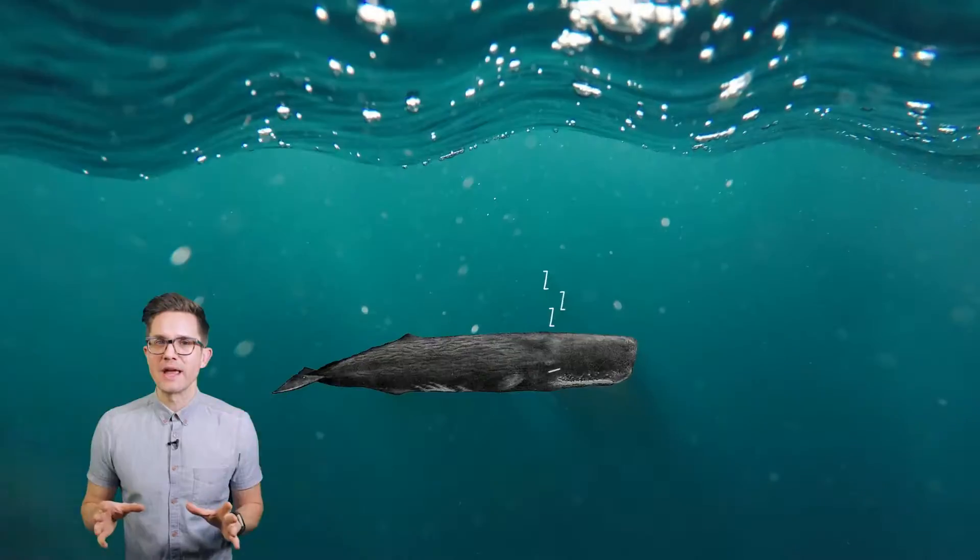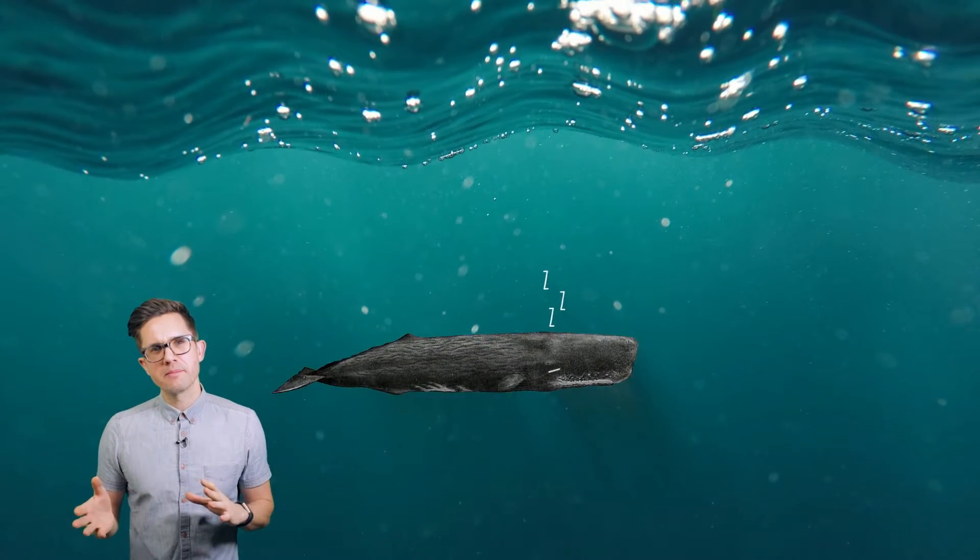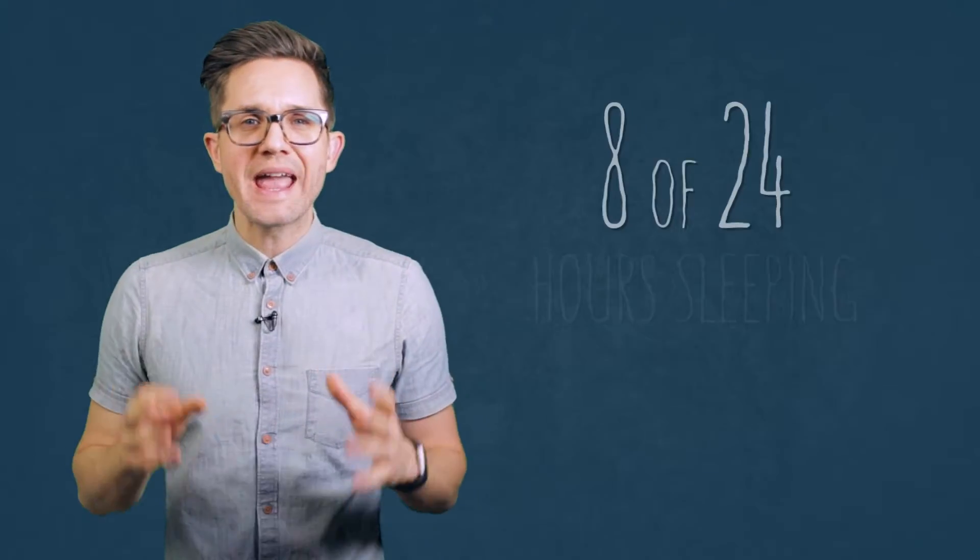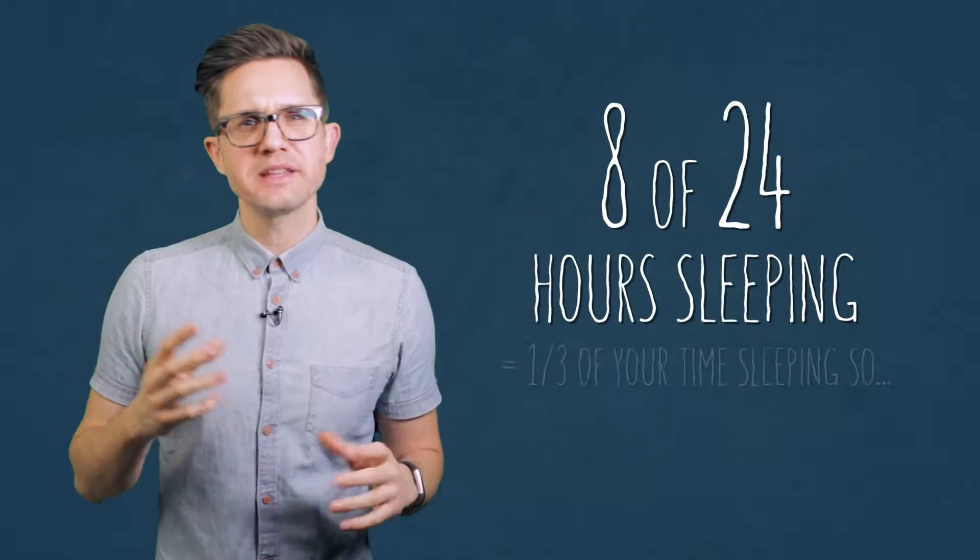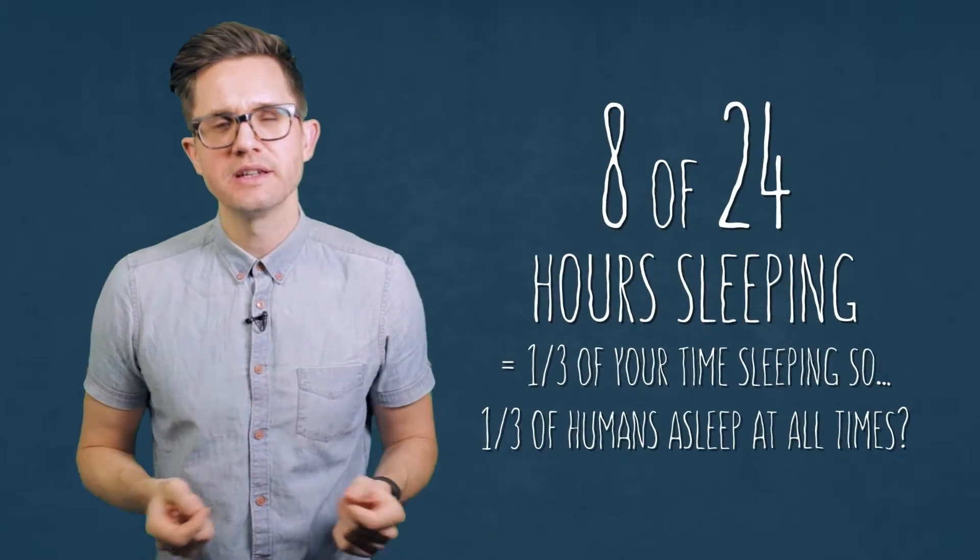But not a lot of sea mammals like whales. They have this thing called unihemispheric sleep which lets them swim with one side of their brain but sleep with the other side of their brain. Anyway, if you spend eight of 24 hours sleeping, that means about one-third of humanity will be sleeping at any one time, right? Wrong.